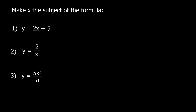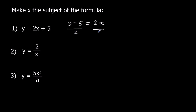Okay, here are three questions — make x the subject of the formula. Pause the video, give them a go, and press play when you're ready for the answers. Question one: I need to get x by itself. The first thing I need to get rid of is the 5 — it's a plus 5 — so I get rid of it by taking 5 away from both sides: y minus 5 equals 2x. Then to get x by itself I divide both sides by 2, which leaves me with x equals y minus 5 over 2.